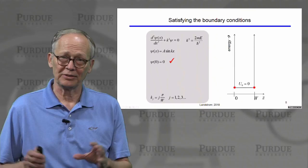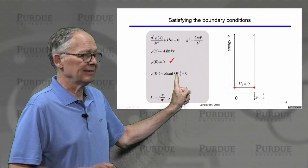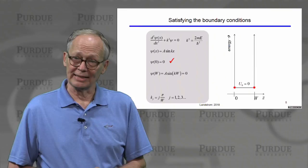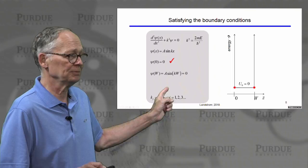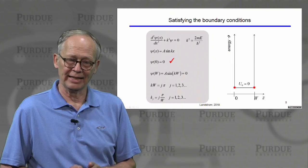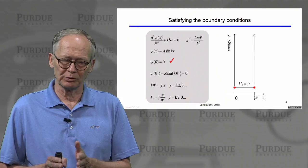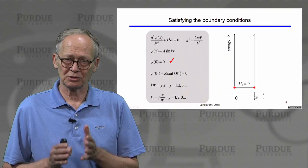We have another boundary condition to satisfy on the other side. We have to ensure that when x is equal to W, sine kx is equal to zero. The sine of pi is zero, the sine of two pi is zero, the sine of any integer number of pi's is zero. So if kW equals some integer number of pi's - one, two, three, four - any one of those k's will satisfy the second boundary condition. This leads us to a discrete set of k values: an integer number times pi divided by the width of the well.